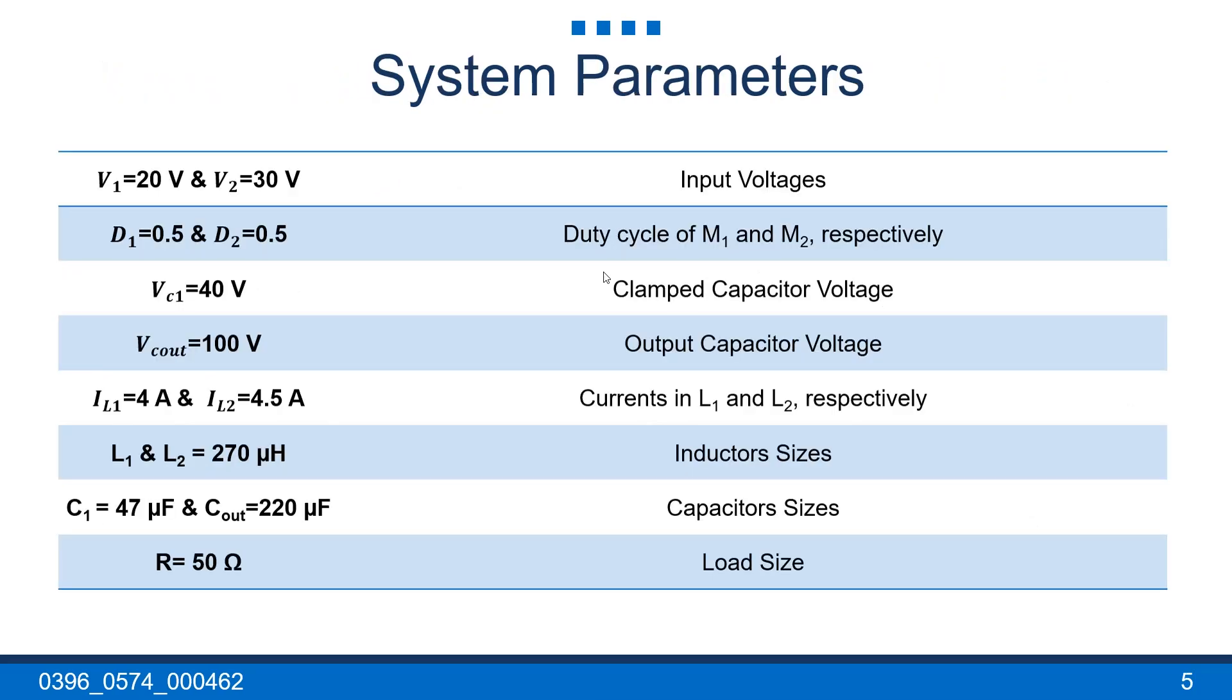The table here shows the system parameters. The value of the input voltages are 20V and 30V. The average duty cycle for the MOSFETs M1 and M2 is 0.5 each if operating in steady state, and if we take into consideration the assumption that the system is ideal. The clamped capacitor voltage in ideal operation is 40V and the desired output voltage which is also the output capacitor voltage is 100V. The currents in L1 and L2 are 4A and 4.5A respectively. The inductor sizes are 270 µH for each. The capacitor sizes are 4.7 µF for the clamp capacitor and 220 µF for the output capacitor. The load resistance size is 50 ohms.